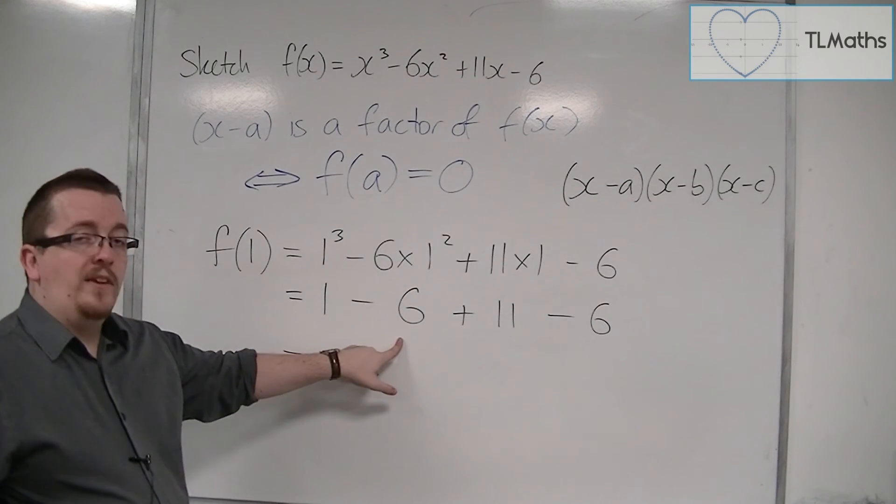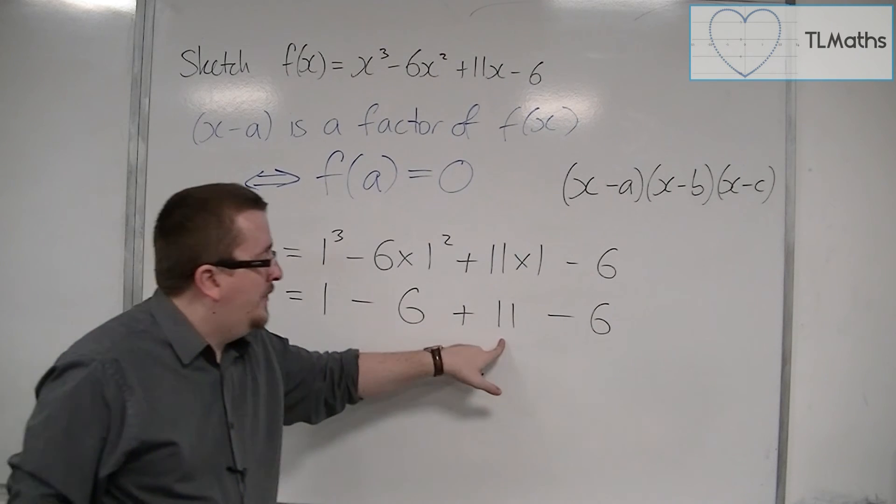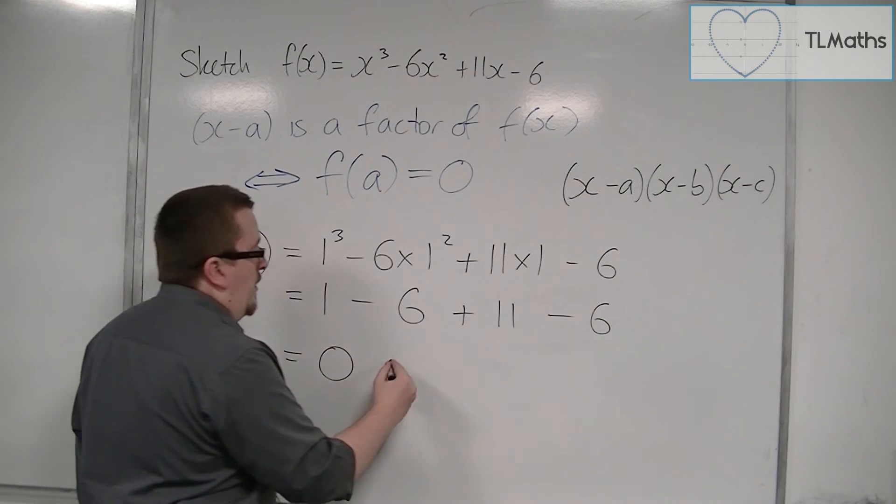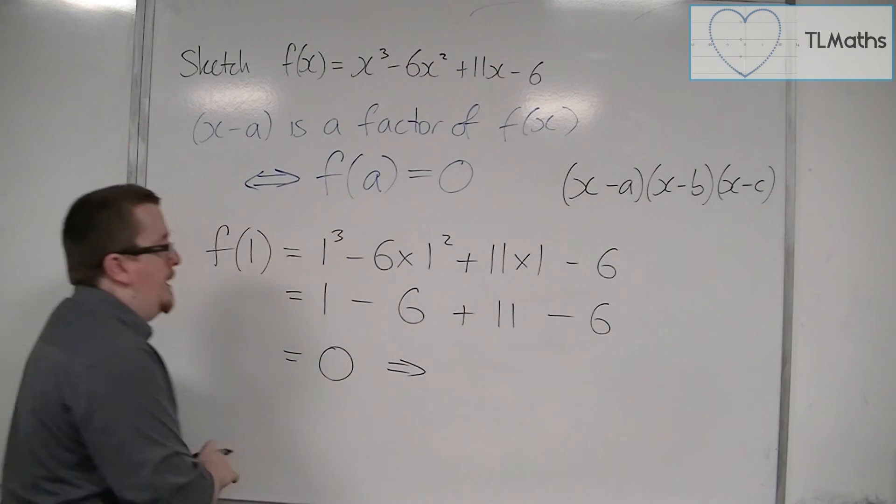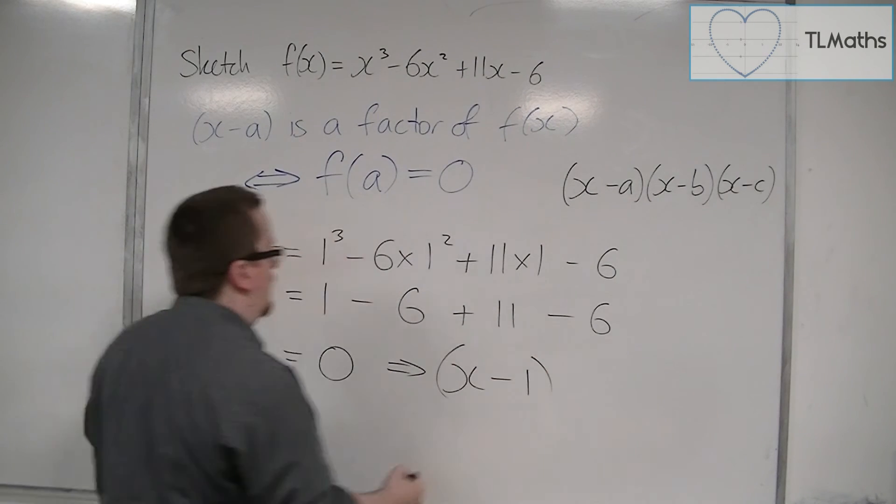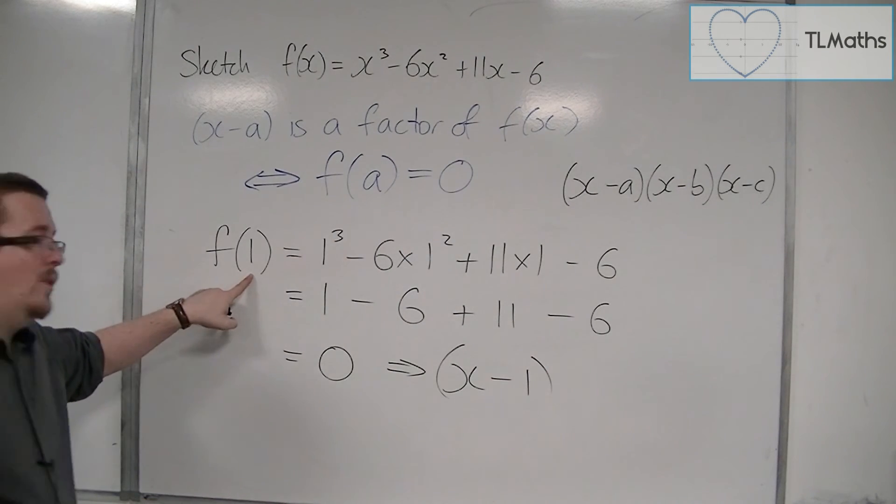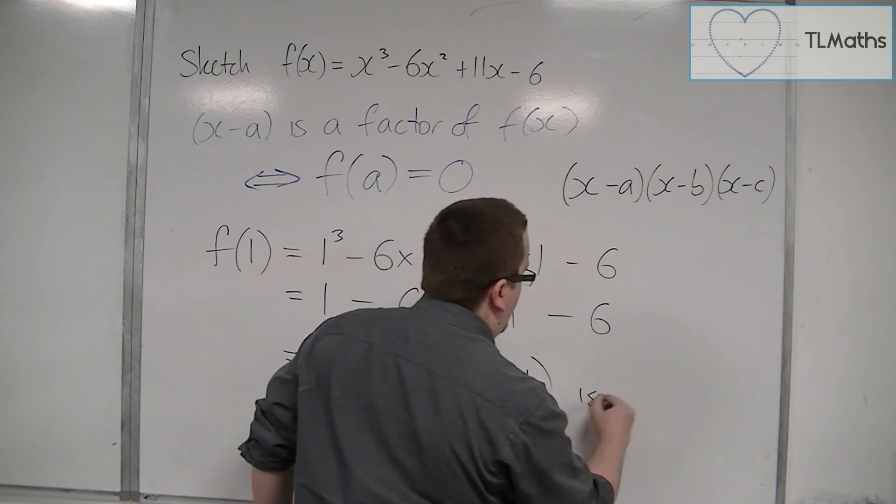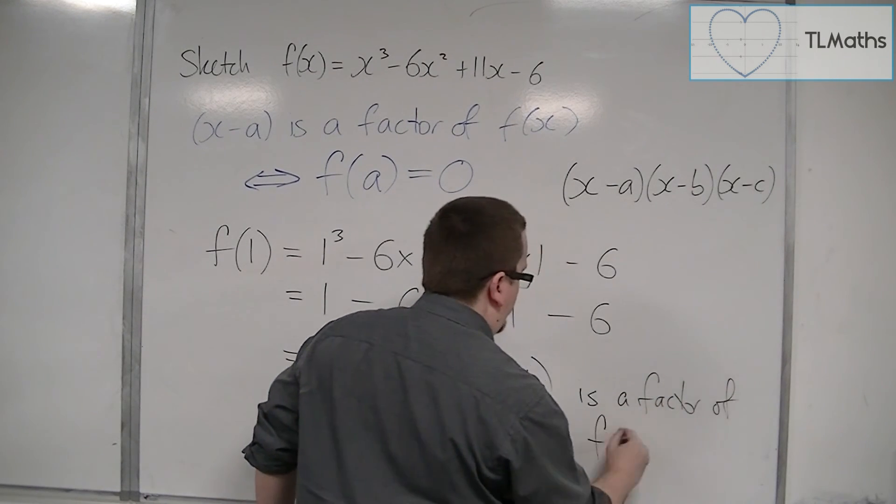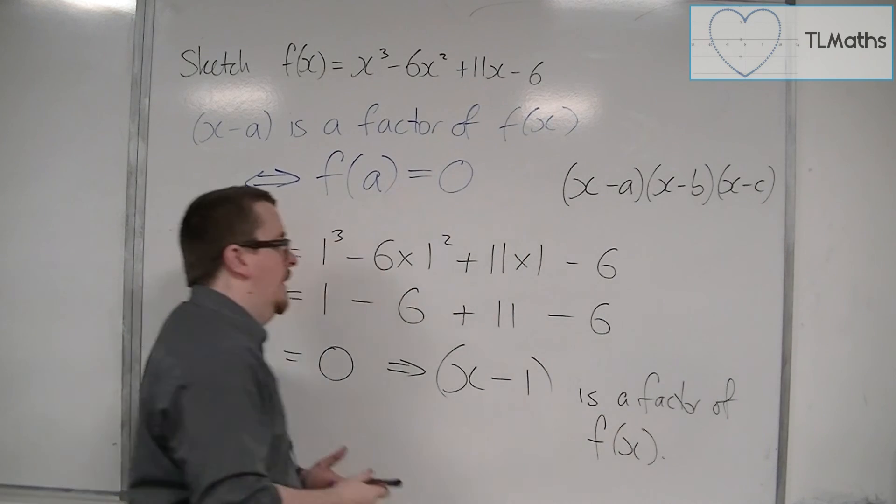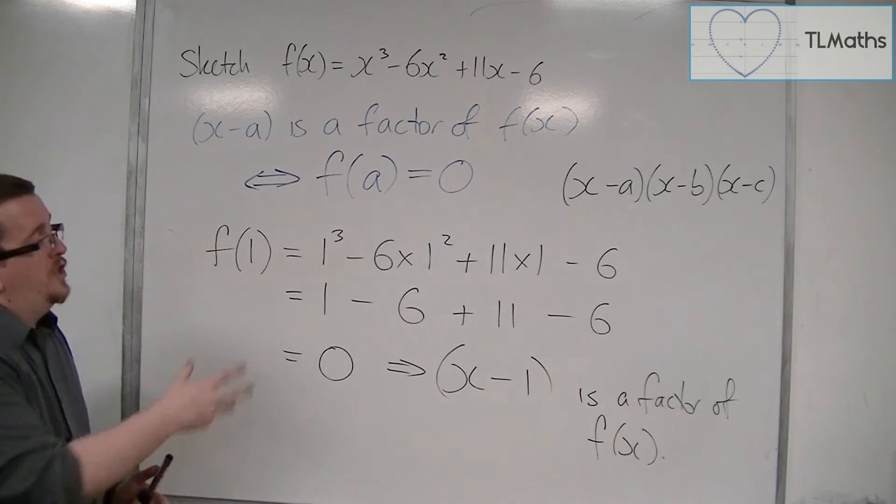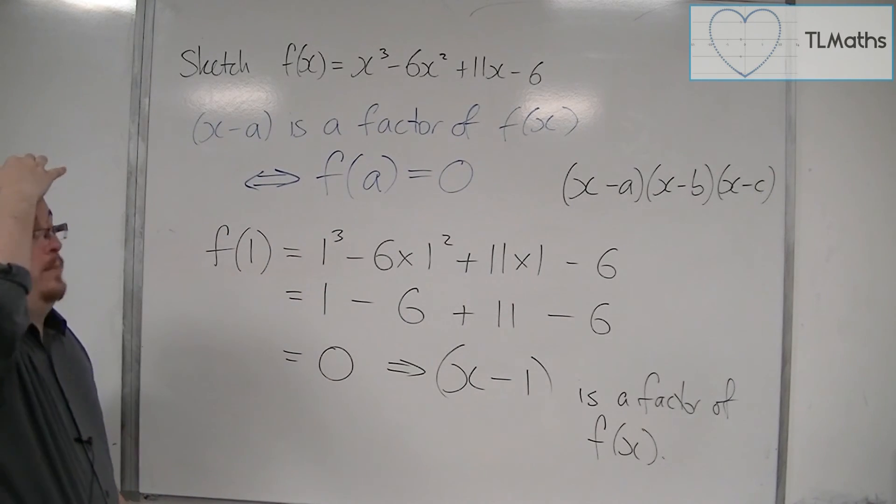1 - 6 is -5, plus 11 is 6, minus 6 is 0. Therefore, this implies that (x-1) is a factor of f(x), and that gives me the first step to factorize that cubic fully.